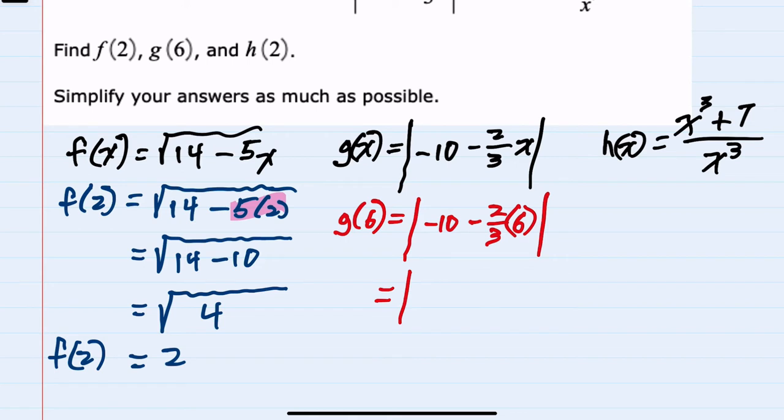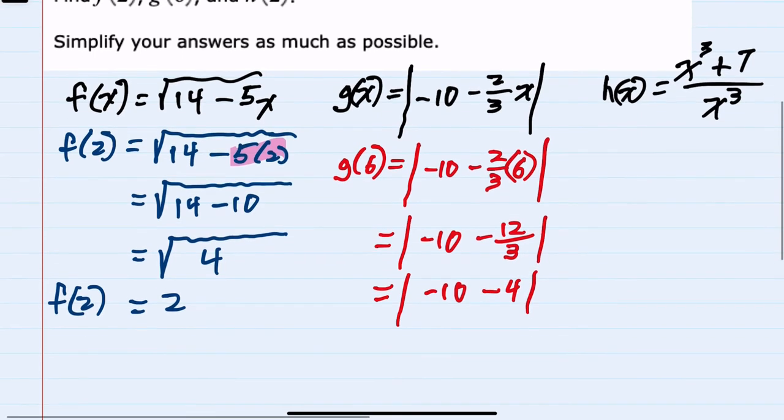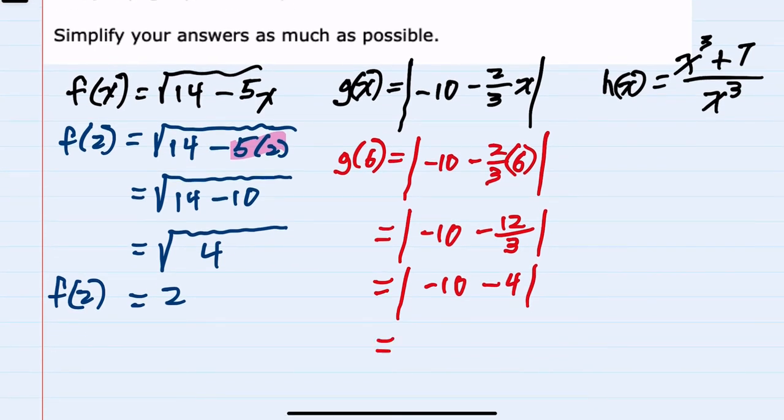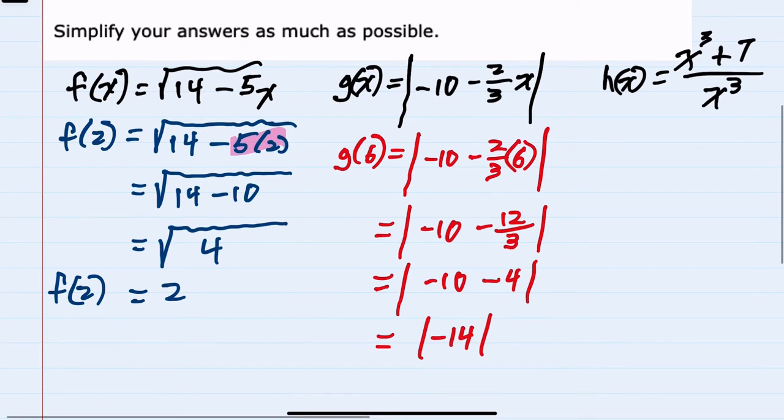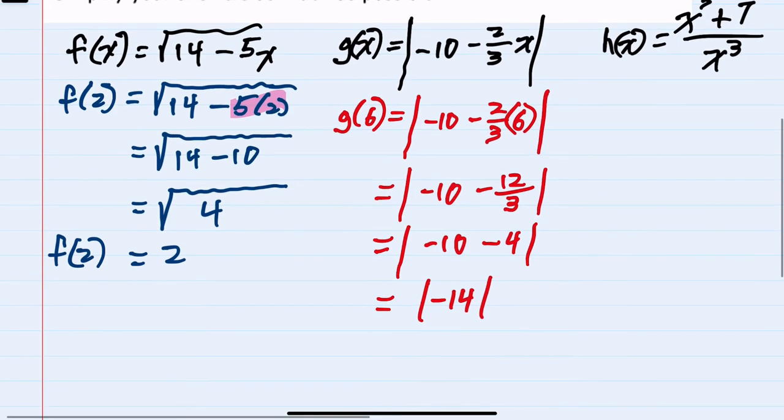Negative 2 times 6 is negative 12 over 3, and we can simplify negative 12 over 3 as just negative 4. Continuing to work inside the grouping symbol, negative 10 minus 4 is negative 14, still inside the absolute value. The absolute value of negative 14, since absolute values are positive, is just 14. So g of 6 is 14.